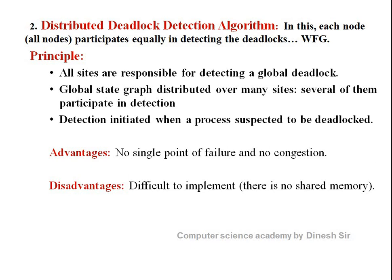The principle is that all sites are responsible for detecting a global deadlock, and the global state graph is distributed over many sites. The advantage is no single point of failure — if one point crashes, the system automatically switches and all nodes work in parallel. The disadvantage is that it is difficult to implement because many nodes must be managed, making it more complicated.